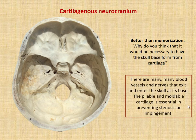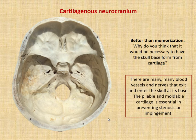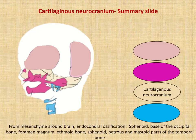Practically speaking, there are a lot of blood vessels and nerves that go through the base of the skull, and cartilage is a lot more pliable, so you're going to have fewer problems. That's not necessarily a strict cause and effect, but it helps remember which part of the cranium comes from a cartilaginous precursor.